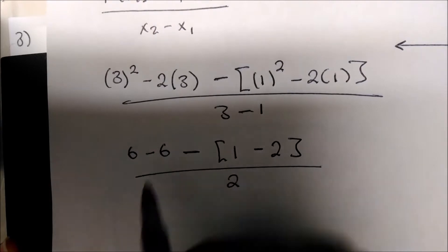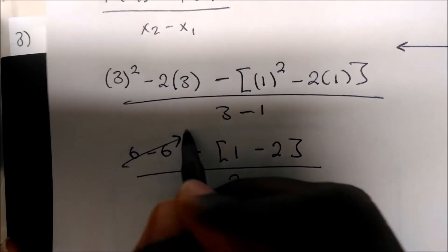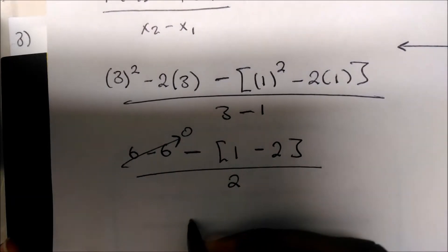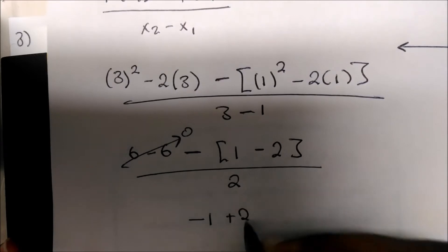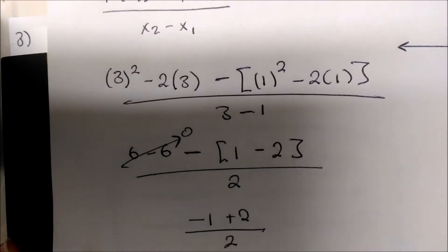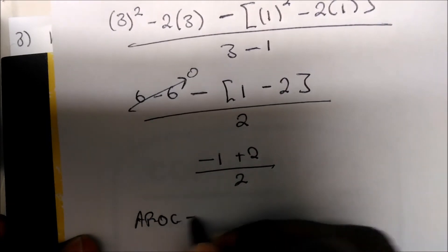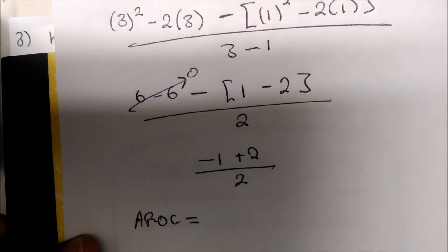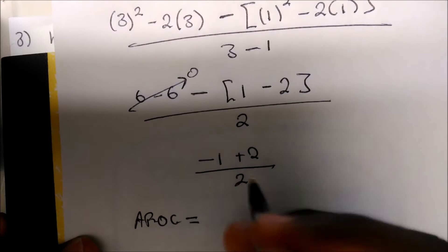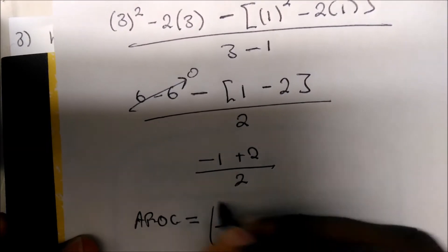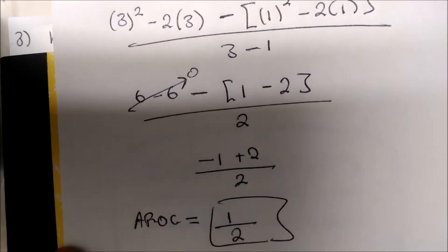So this leaves us with 0 minus (negative 1 plus 2) over 2, which is negative 1 plus 2 — that's just 1 — over 2. The average rate of change is one half.